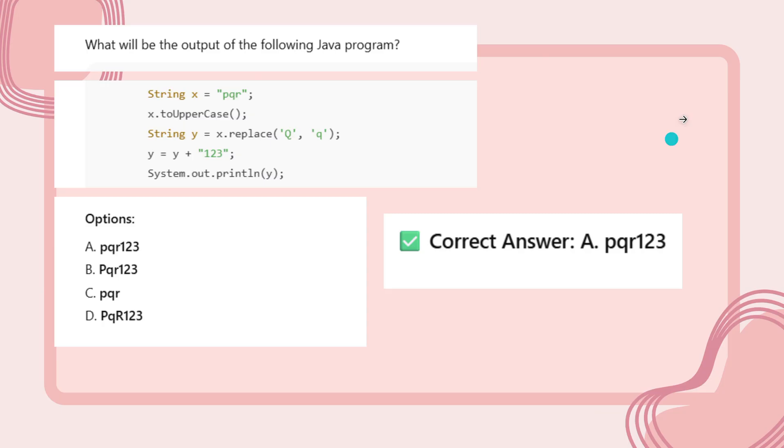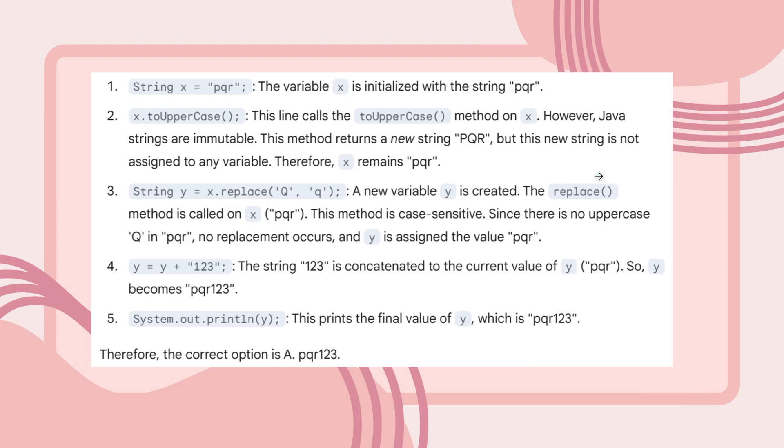Let us go into the video. Technical questions will be in this format. What will be the output of the following Java program? String x is PQR, x.toUpperCase, string y equals x.replace, and in this way you have some pseudo-code with given options. The correct answer is PQR123.